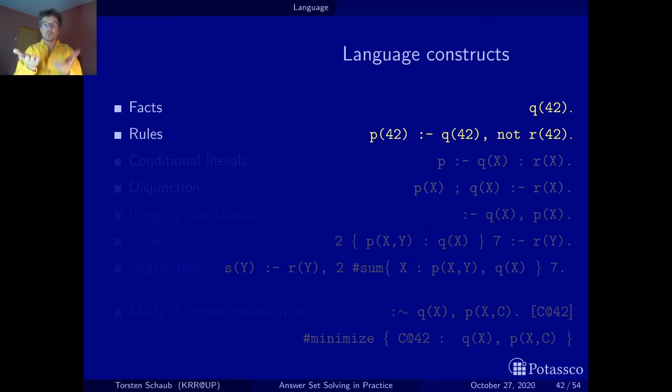This is more or less the basic constituents of logic programs. I've already shown you briefly in the first section the syntax - this is the if operator or the implication, colon minus. We also use a comma for conjunction and not for negation. And finally, for real systems, every rule has to be terminated by a dot just to tell the parser this is the end of the rule. Now, let's look at more interesting language constructs that go beyond this.